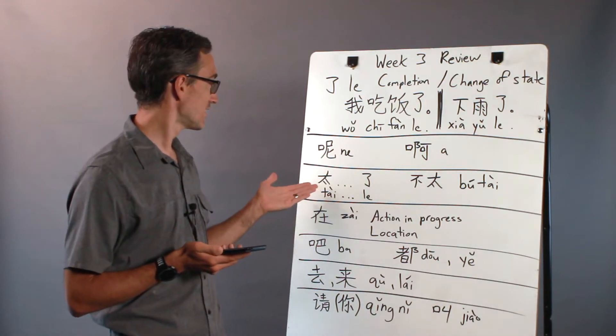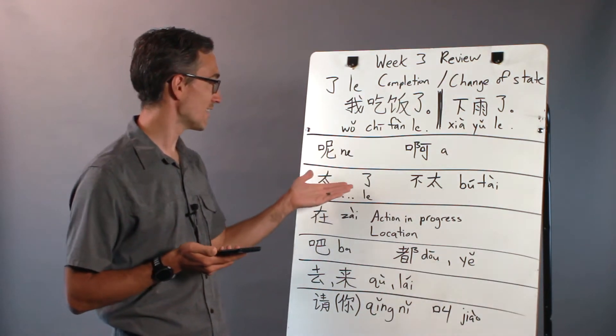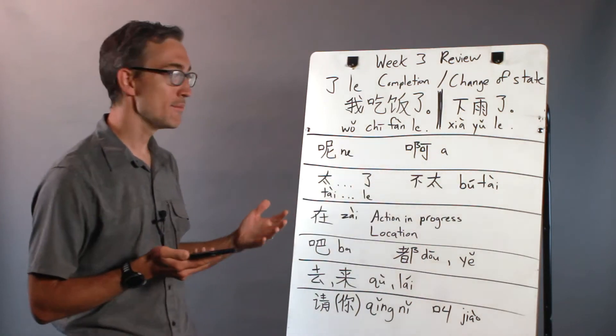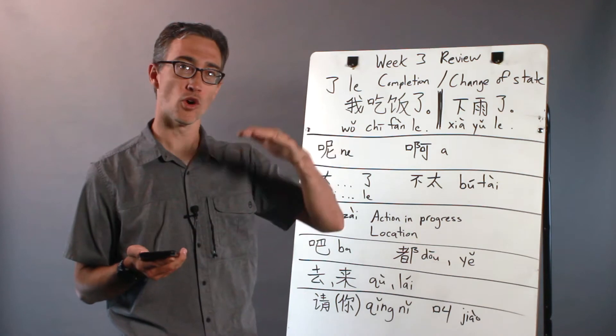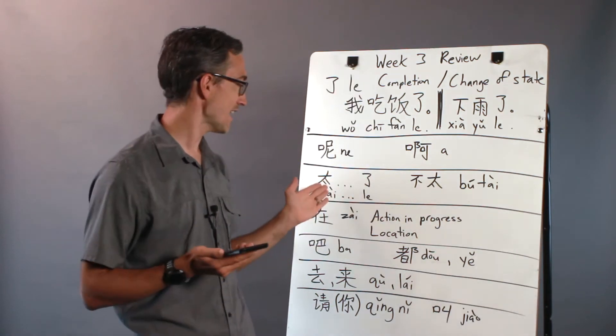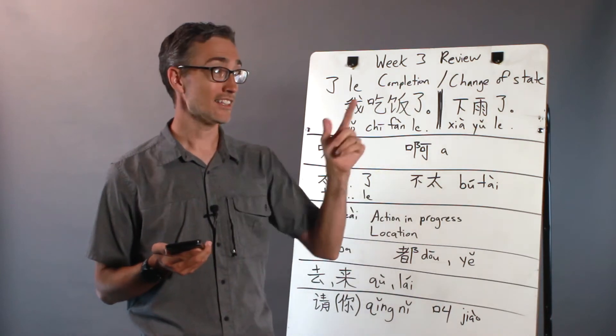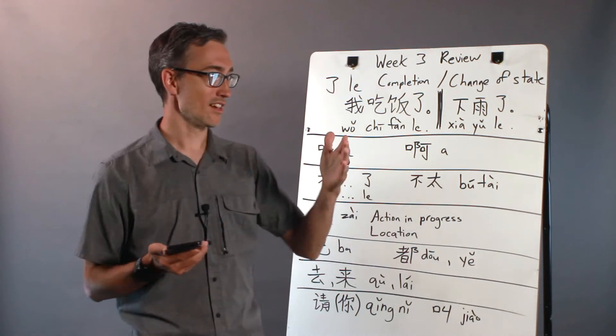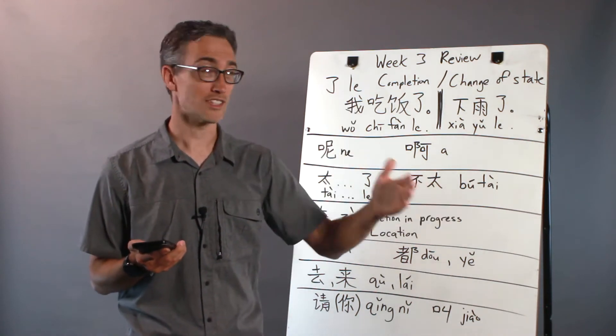And here we have 太. We talked about 太 (tai) 了. That's a phrase. 太 means extremely or excessive or over a limit of normalcy. And so the phrase is 太 adjective 了. Like 他太高了, he is so tall. 他太高了.